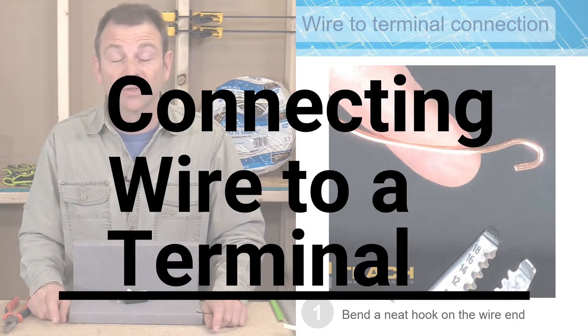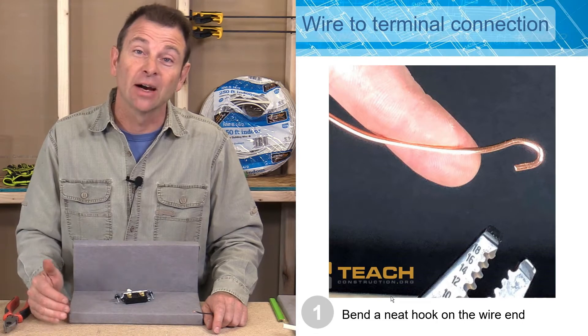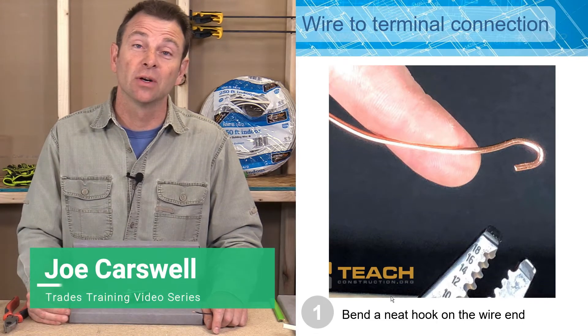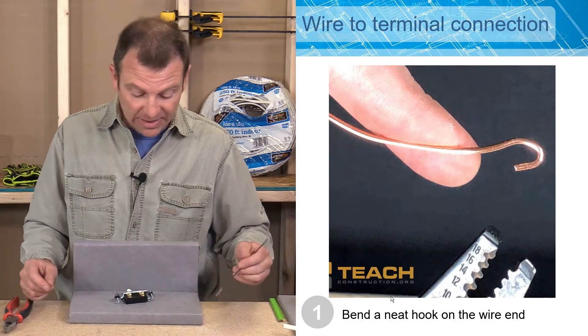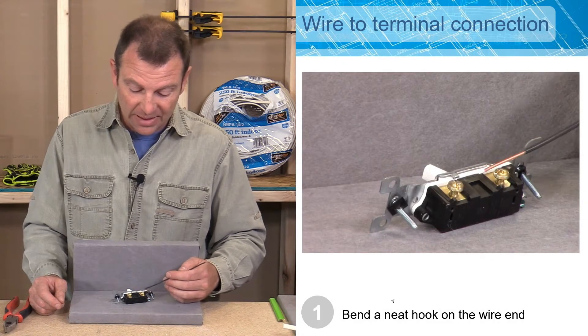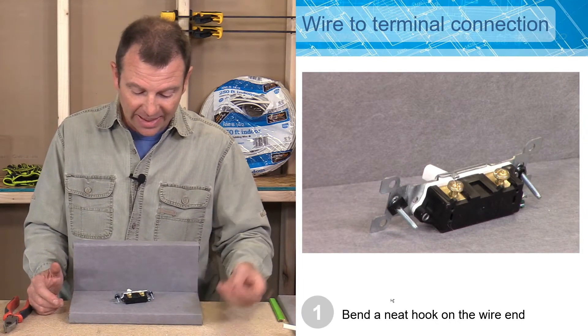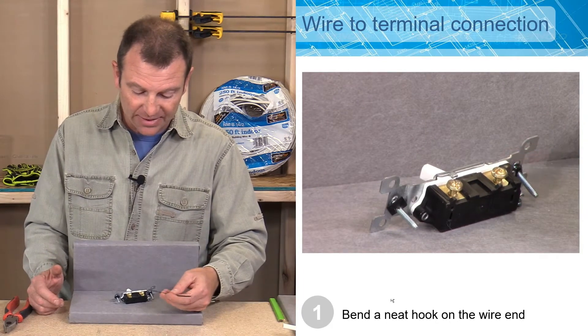Let's talk about wire to terminal connections. A whole lot of connections that we have to make of wires to devices are going to be terminal connections. As you see here, this is my single pole switch. It has two terminals. They're basically round screws and we need to get a wire attached to that screw.